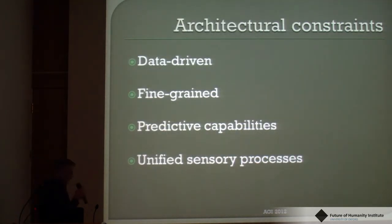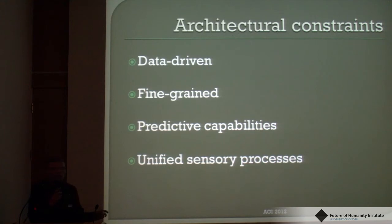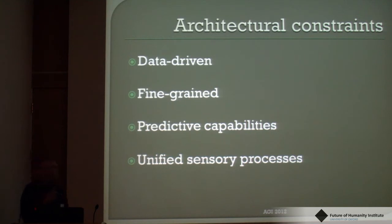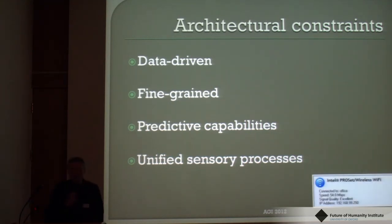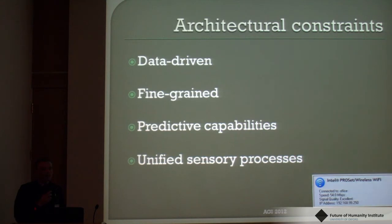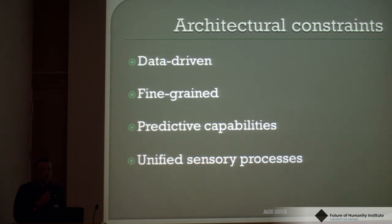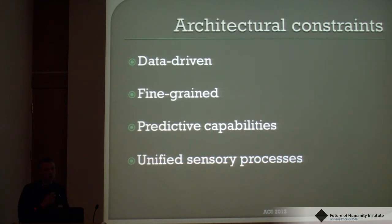Although the design is not architecture-dependent, there are some architectural constraints. Attention is notoriously difficult to carve out because it relates to so many other processes. The constraints are: the architecture must be data-driven, with all processing occurring in response to the recurrence of data; fine-grained processing and data units; predictive capabilities — a mechanism capable of generating predictions as control data for attention; and unified sensory processes treating information identically whether from outside or within the system.